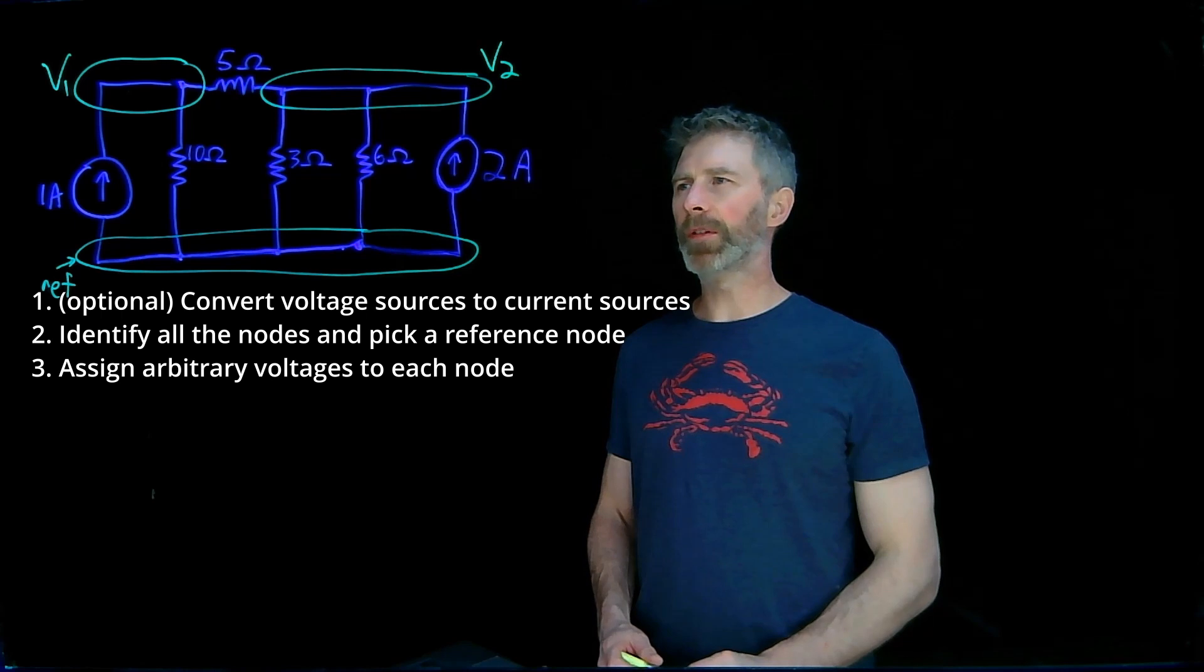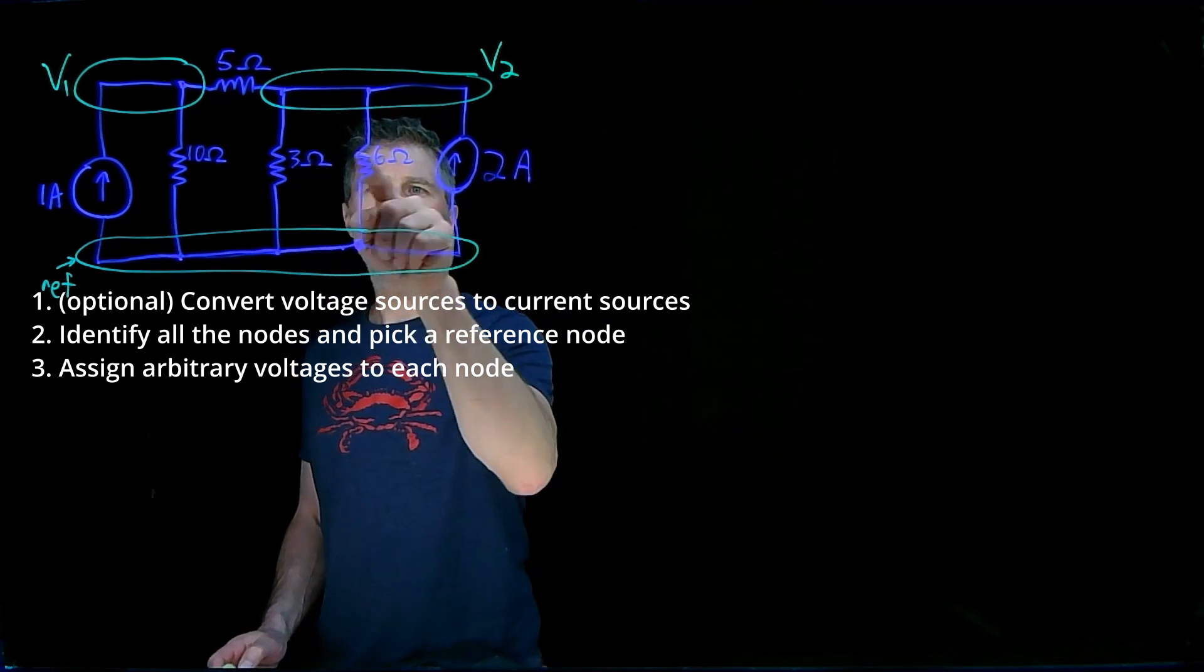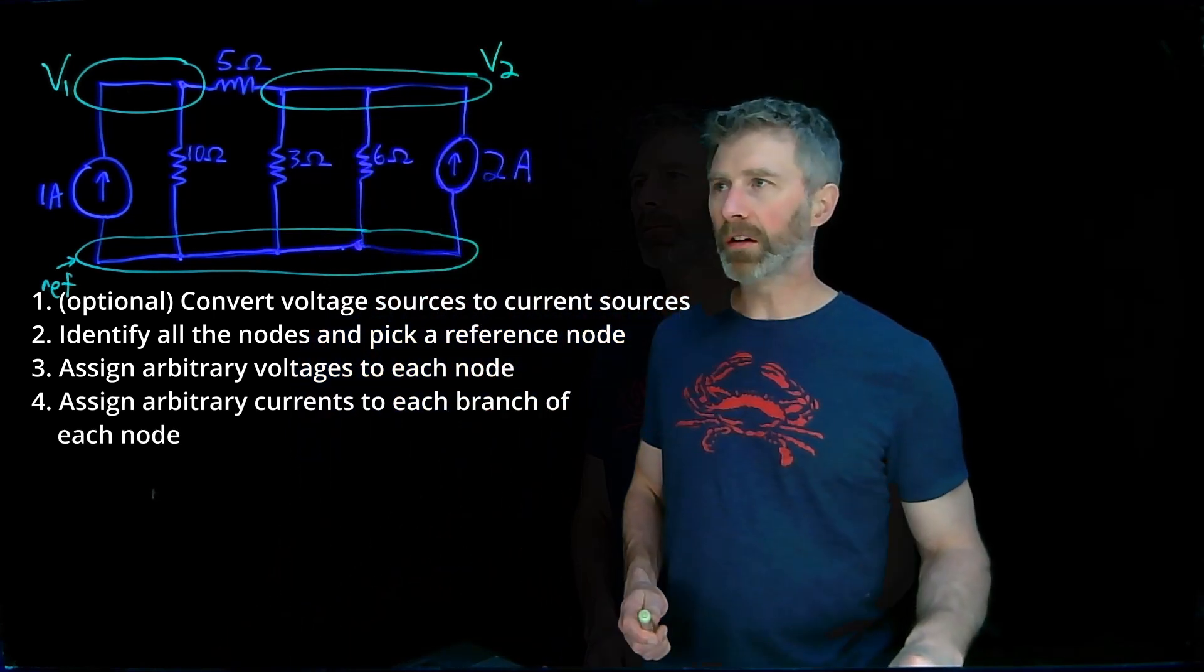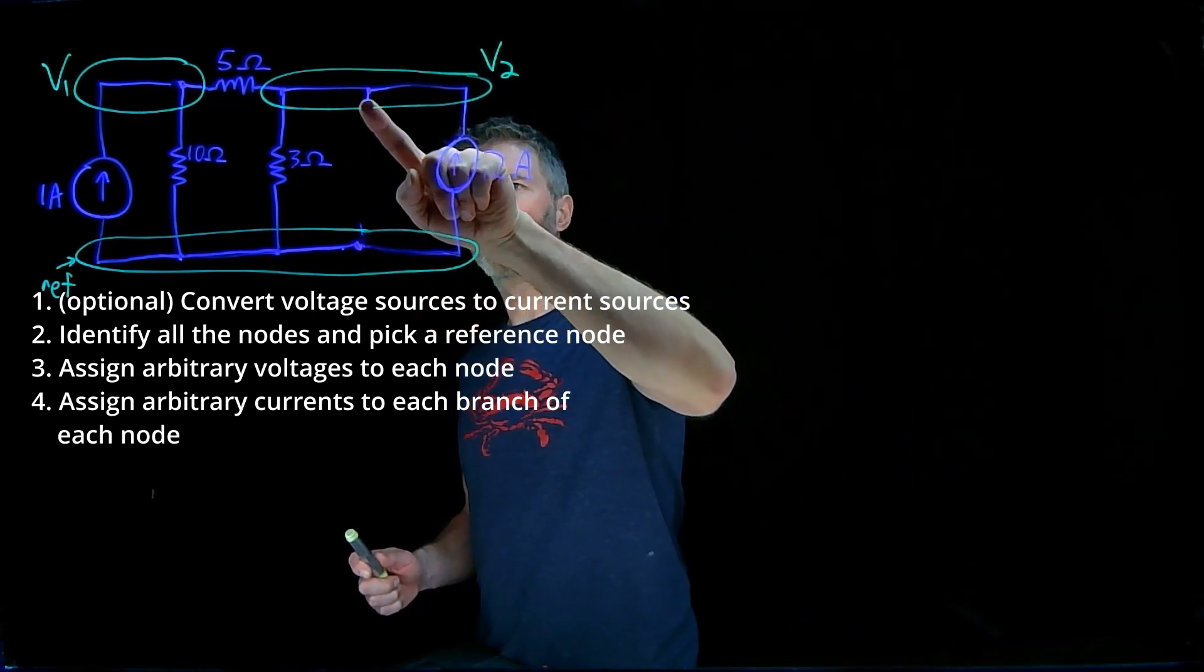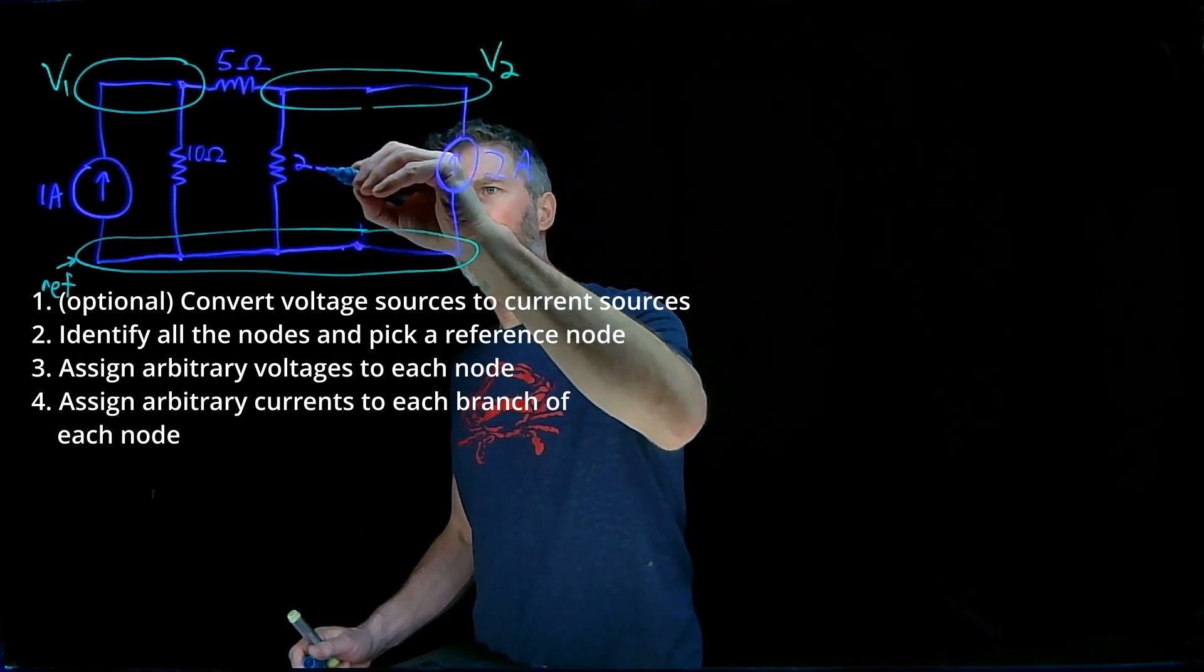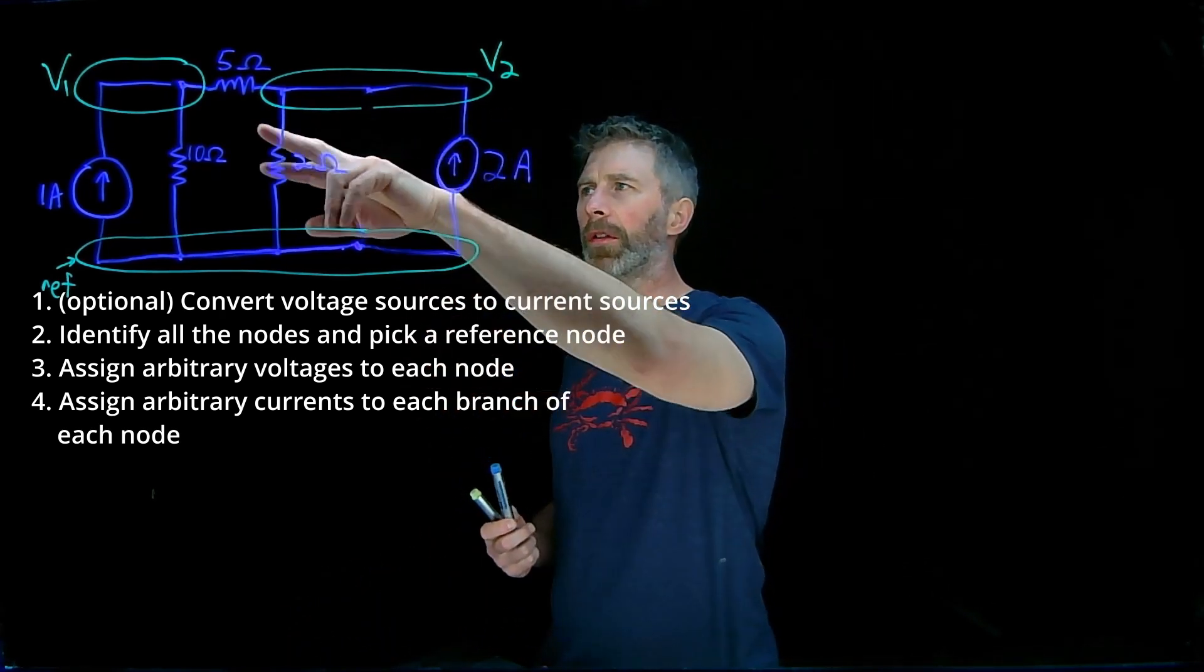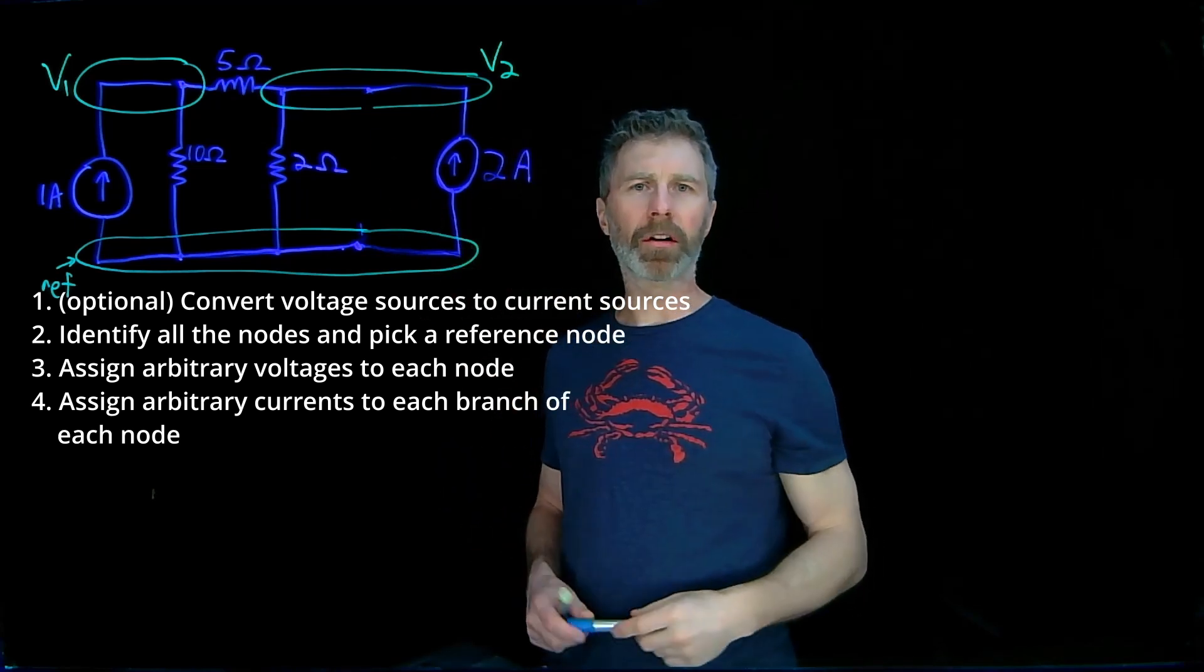One thing we can do is simplify this circuit again before we go on to the next step. We can combine the 3 ohm and the 6 ohm resistor because they are in parallel with each other. When we combine them together, it gives us a 2 ohm resistor. The equivalent circuit will look like this. This just makes things a little bit simpler to figure out.